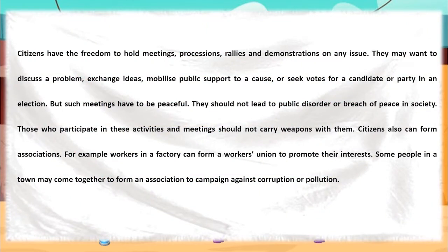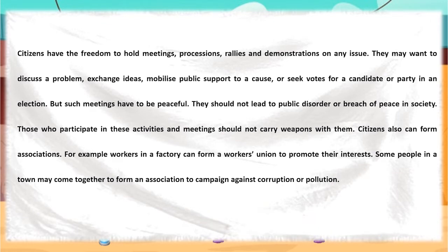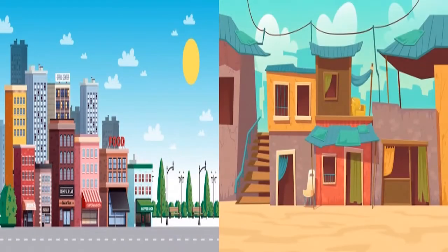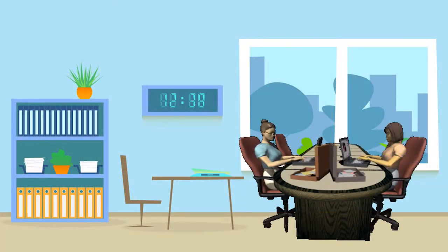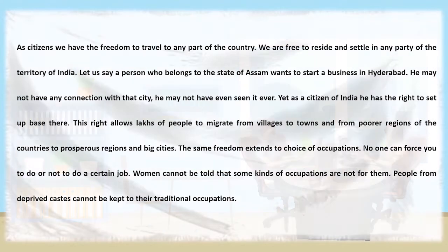A group of workers may form an association to protect their interests. Some people, if they want, may join campaigns against issues like pollution or corruption. A person has the freedom to travel to any part of the country by their own wish. Inside India, we are free to travel and reside in any place we want. A person from Assam who has no roots in Hyderabad can set up a business there. People from different villages and towns move to cities and settle there for work — no one can prevent them from doing so.